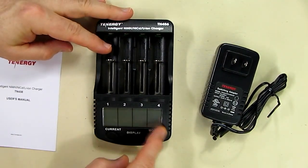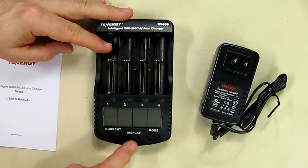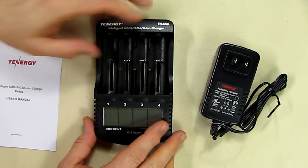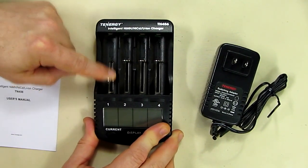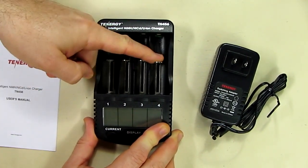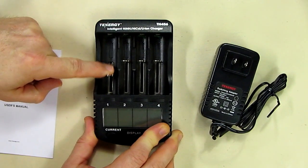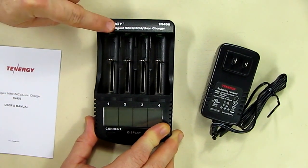You can see you got the four ports right here, the current switch, display, mode, and the ports themselves that are all spring-loaded. This has the negative and that's the positive right there.